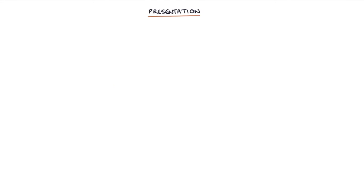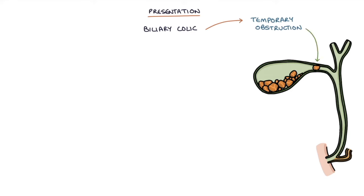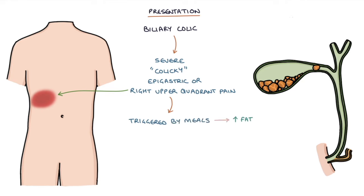Patients with gallstones may be completely asymptomatic. If the gallstones are causing symptoms, the typical symptom is biliary colic. Biliary colic is caused by stones temporarily obstructing the drainage of bile from the gallbladder. The stone may get lodged at the neck of the gallbladder or in the cystic duct, causing blockage and pain, and then when it falls back into the gallbladder, the symptoms resolve. This causes severe, colicky, epigastric or right upper quadrant pain, often triggered by meals — particularly high-fat meals — lasting between 30 minutes and 8 hours, and it may be associated with nausea and vomiting.